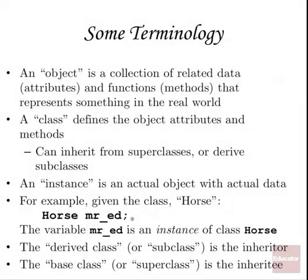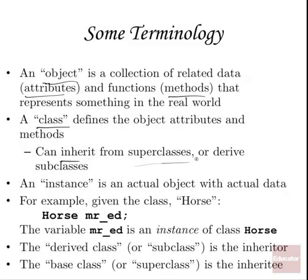Let's get some terminology out of the way. An object is a collection of related data, which are called attributes, and functions that operate on that explicit data in that object, and they're called methods. It represents something in the real world. Car is an object. In your car object, you might have your velocity, your location, how many passengers are in the car, etc. A class defines the object attributes, and it can inherit from superclasses, or you can derive from a superclass into a subclass. An instance is an actual object with actual data, as opposed to just generically talking about objects or classes.